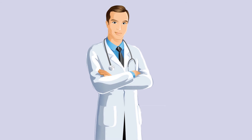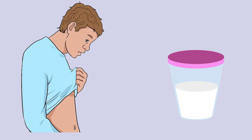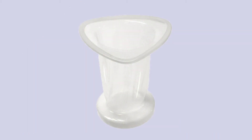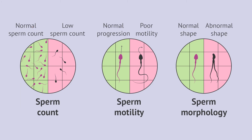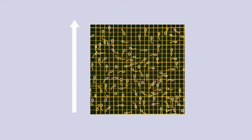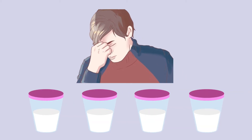The doctor might also ask about sexual habits and sexual development during puberty. For semen analysis, a sample is provided by masturbating into a special container at the doctor's office or using a special condom during intercourse. The semen is sent to a laboratory to measure sperm count and check for abnormalities in shape (morphology) and movement (motility), as well as signs of infection. Several semen analysis tests are done over a period of time to ensure accurate results, as sperm counts can fluctuate significantly between specimens.